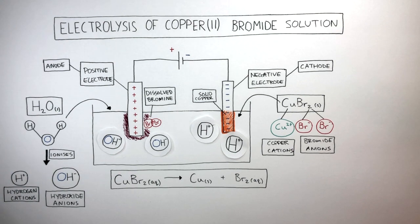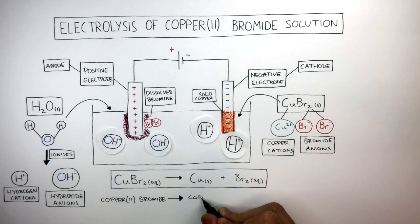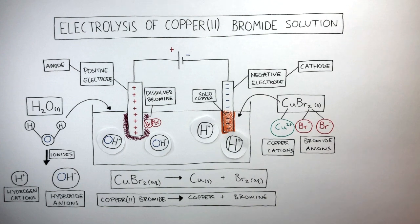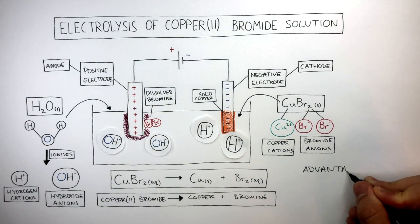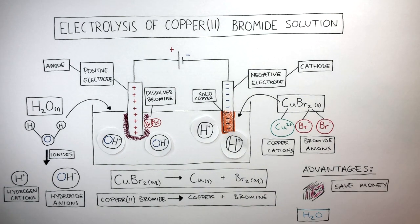The word equation is: copper(II) bromide breaks down to form copper and bromine. Using water to electrolyze copper bromide is much more practical compared to using a lot of heat to melt it until it is molten. The advantages of using water include that it saves money, due to less electricity being needed and no heat being needed to melt the ionic compound.